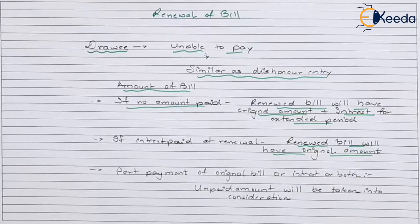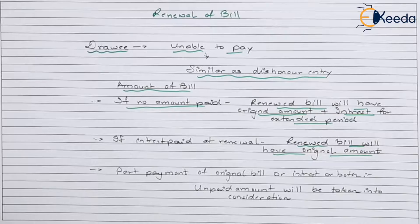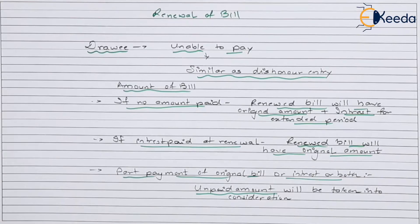The third situation refers to part payment — that means part payment of either the original amount, part payment of the interest amount until the renewal date, or part payment of both the original and interest amount. Then in such case, only the amount that is unpaid will be taken into consideration.